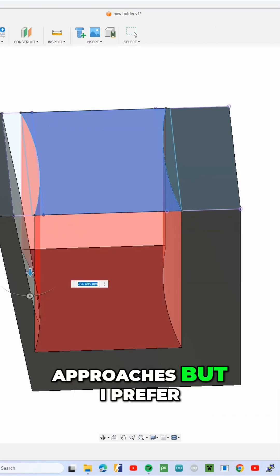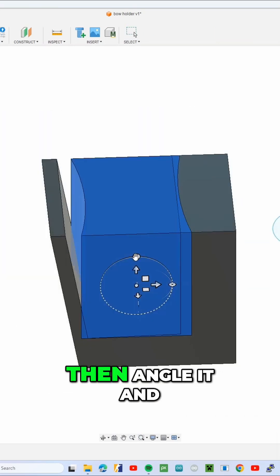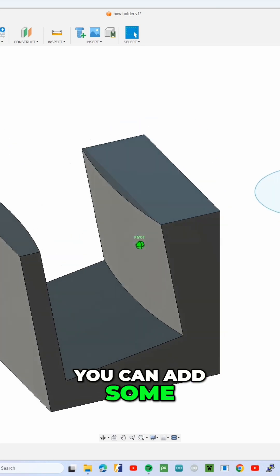You can use different approaches but I prefer to create first a body then angle it and cut it out. Afterwards you can add some bevelled edges.